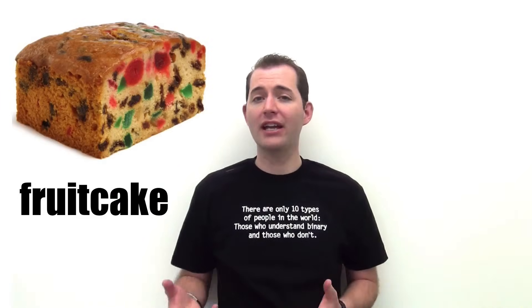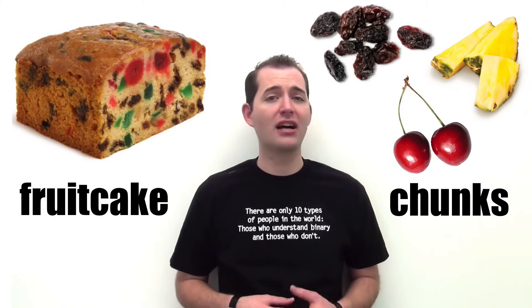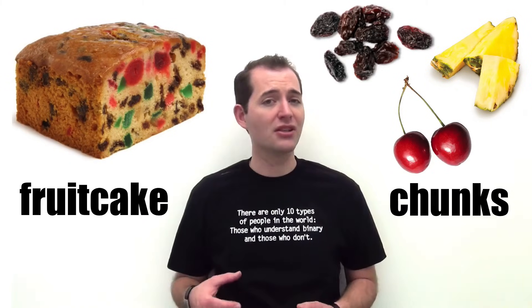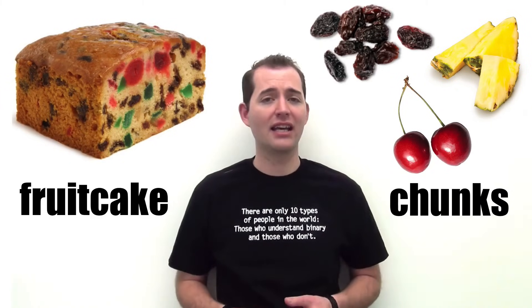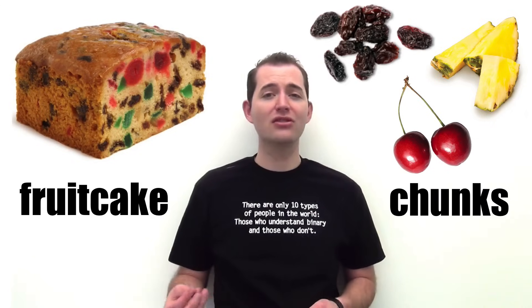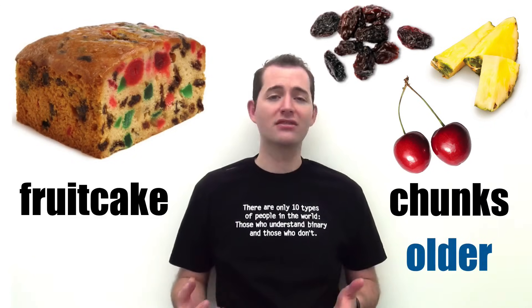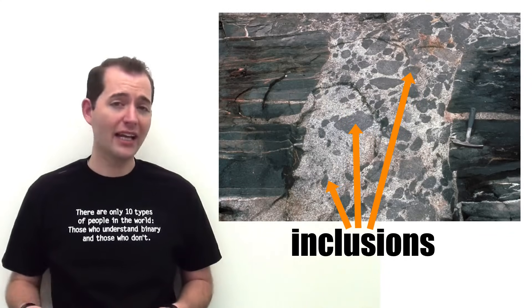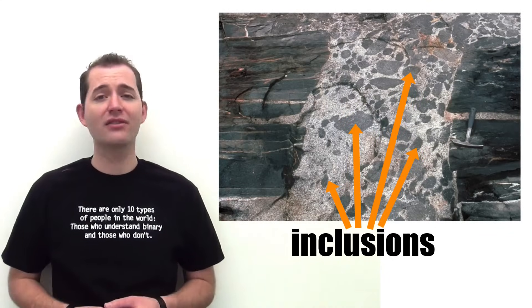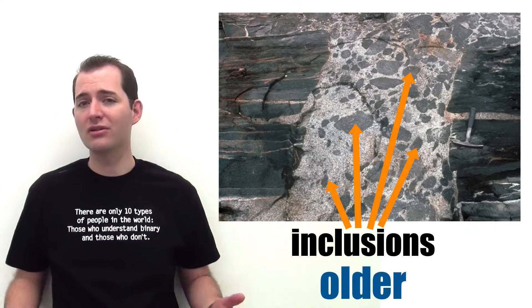An analogy that's similar to the law of inclusions is that of a fruitcake. A fruitcake includes a lot of chunks or other items, and those items or chunks had to be made and bought before they could be included in that cake. So what this means is that those chunks are older than the surrounding cake. The same is also true for rocks. Any rock that's included inside of another rock must be the older of the two.